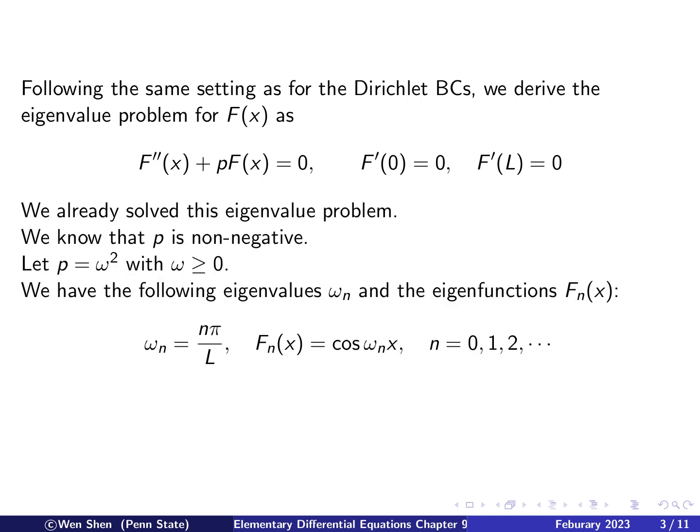So again, we see that this is an eigenvalue problem that we are familiar with. We solved it as one of the standard problems. And we know that the eigenvalues p here has to be non-negative. Then we can write it as p equal omega square, where omega is bigger than zero.